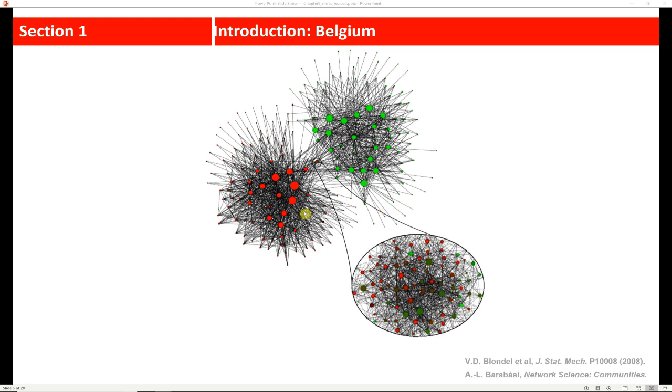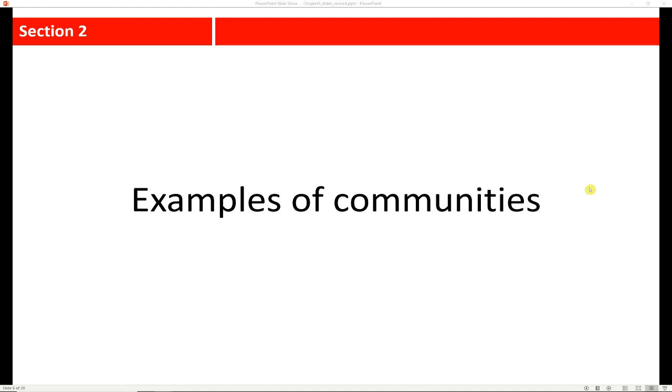Once they assigned people to sections of the graph by language spoken, you could really see that one cluster is exclusively French and the other is exclusively Dutch speaking. And so there are lots of different examples of communities. And I'm sure that you can think of some and you'll have some time to discuss them in your discussion post for this week.